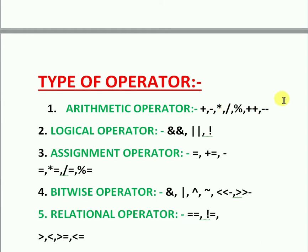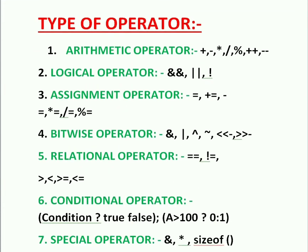Division is used to divide two operands and gives the quotient as the answer. Plus-plus means increment — it is used to increment an operand. Minus-minus means decrement — it is used to decrement an operand.